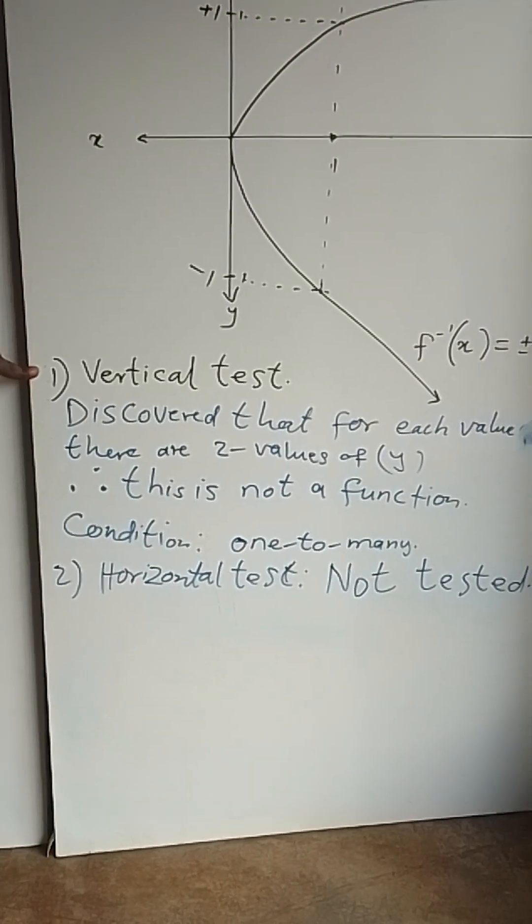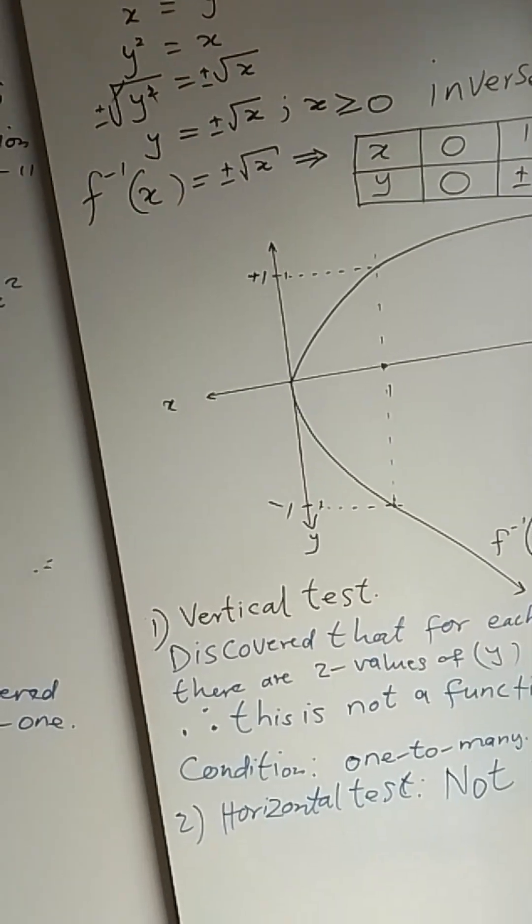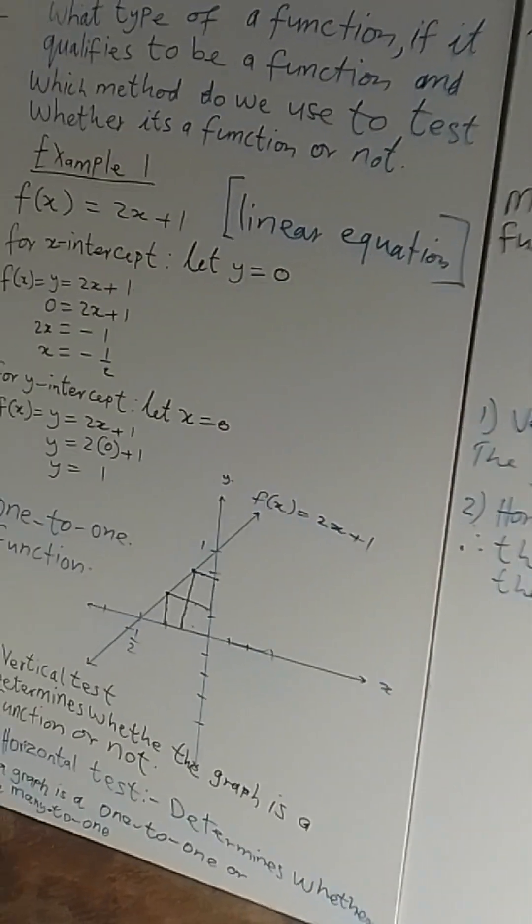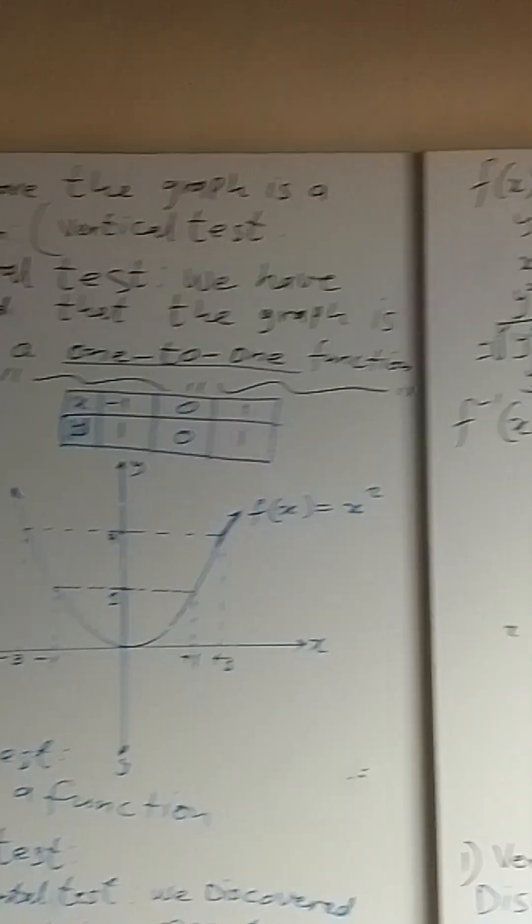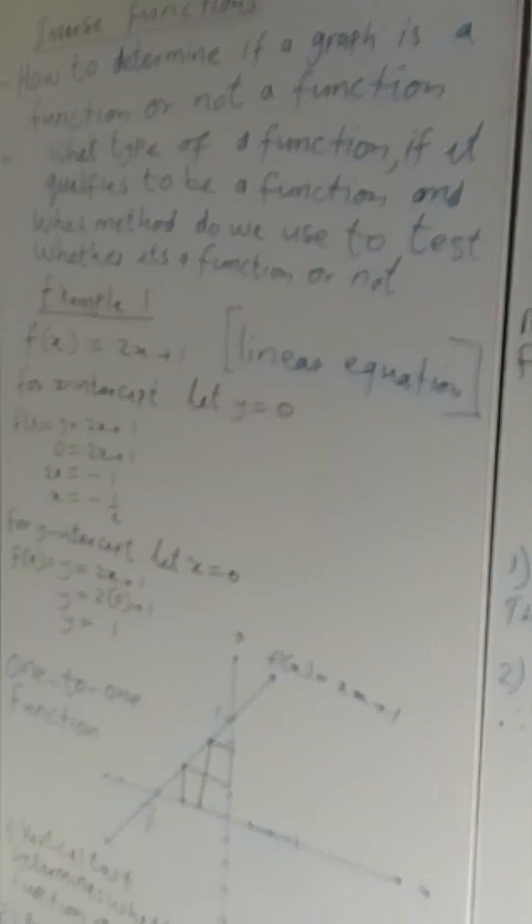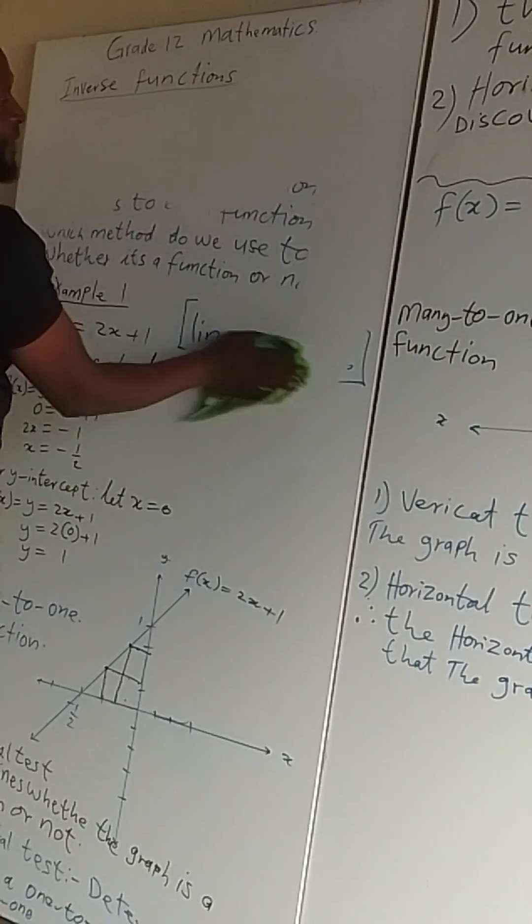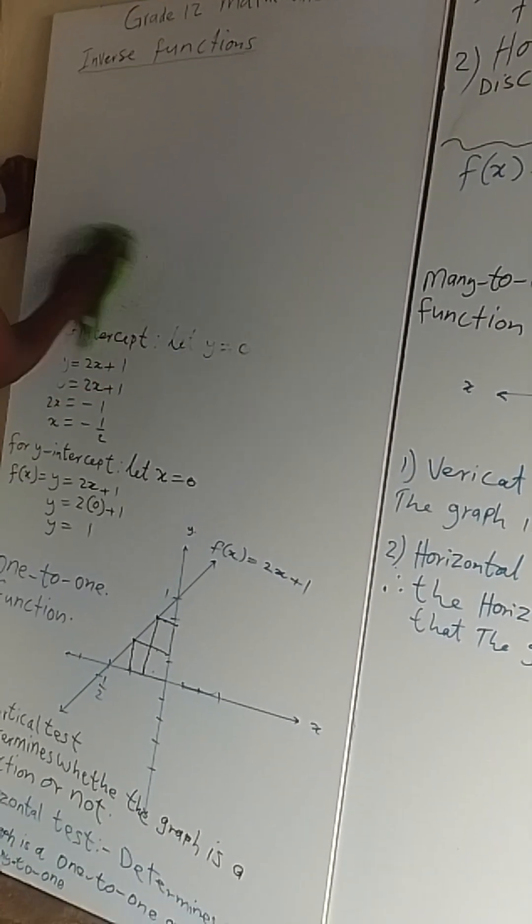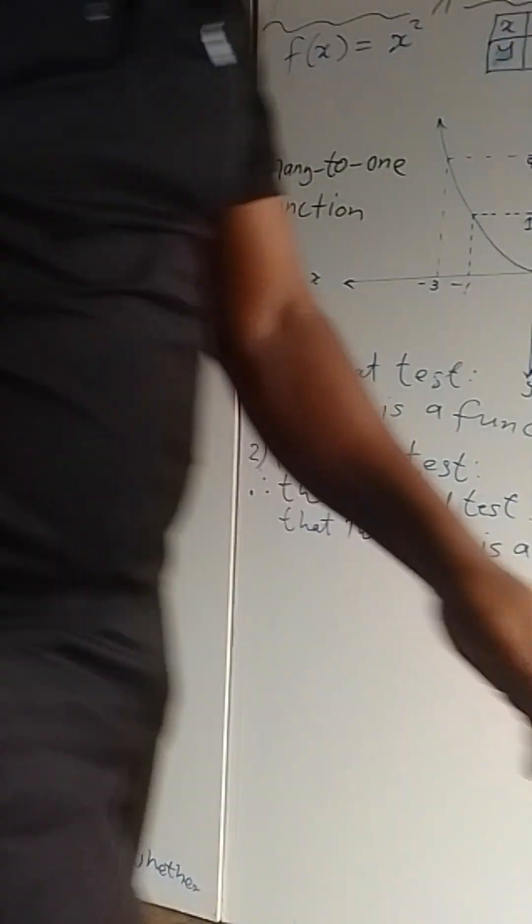The condition is one-to-many. There is no horizontal test, not tested because it has failed from the first condition of vertical test. Now let us do a few problems that are going to give us a clear understanding of why and how do we find a function and its inverse at the same time. I want you to come with me here to see if we can graph a function and find its inverse and see if that inverse is a function or not, and on what conditions.